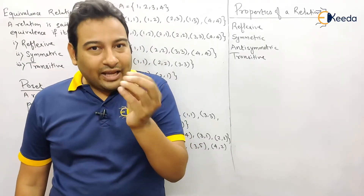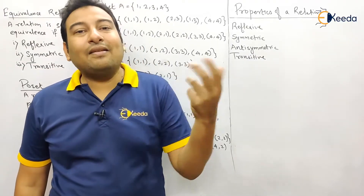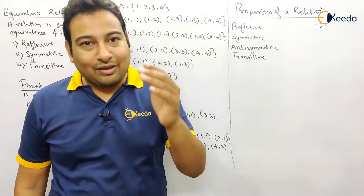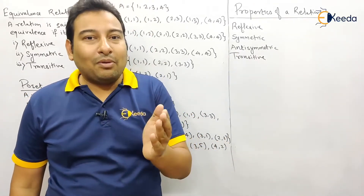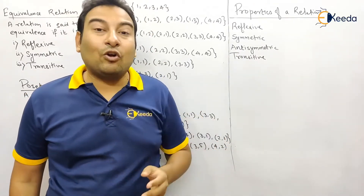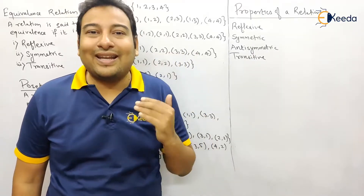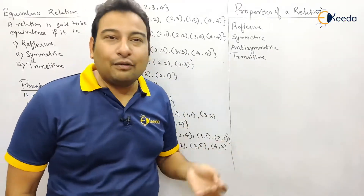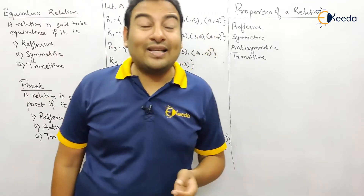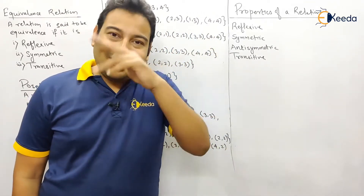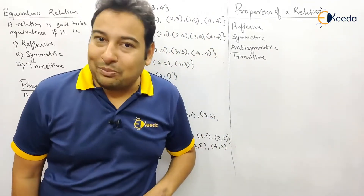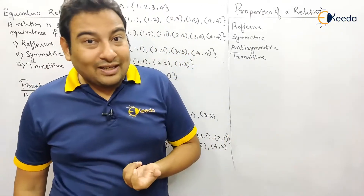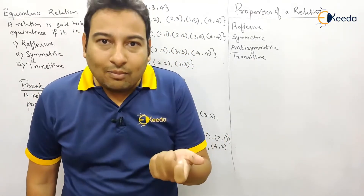That means if element (a, b) is present then (b, a) must also be present. Anti-symmetric is opposite to symmetric: if (a, b) belongs to R then (b, a) does not belong to R. In symmetric and anti-symmetric, the self-element doesn't matter. Finally, transitive: if (a, b) and (b, c) are present then (a, c) must be present.